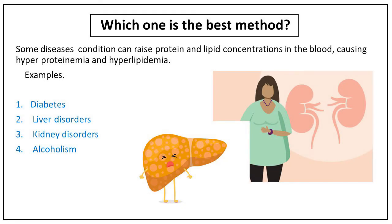Some disease conditions can raise protein and lipid concentrations in the blood, causing hyperproteinemia and hyperlipidemia respectively. Examples include diabetes, liver disorders, kidney disorders, and alcoholism.